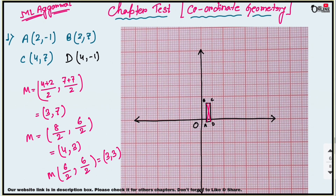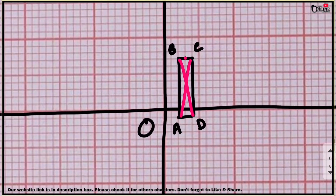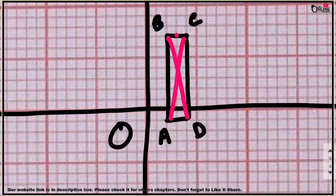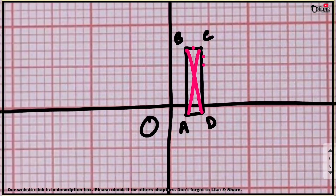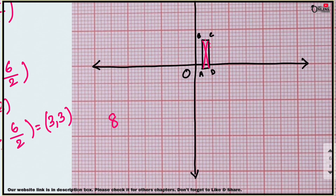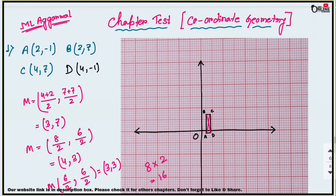Finally, find the area of the rectangle. You need the length and breadth. Counting on the graph: the length is 8 units and the breadth is 2 units. So area = 8 × 2 = 16 square units.